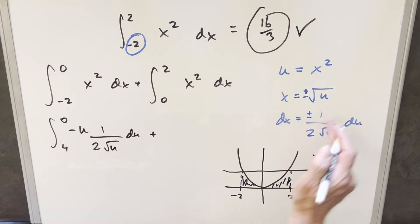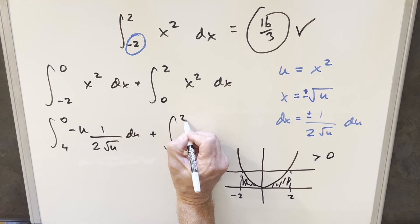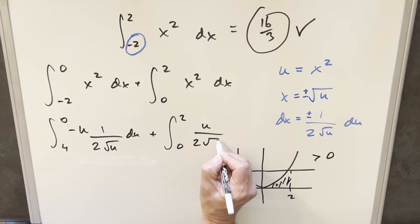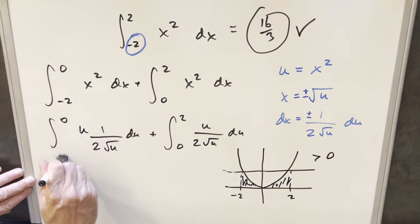And then for the next one, x is always going to be positive here. The derivative is always going to be positive. So this one kind of works out the same as we had it before. This is just going to be u over two square root u. But then here I can use this minus sign to flip the bounds around.